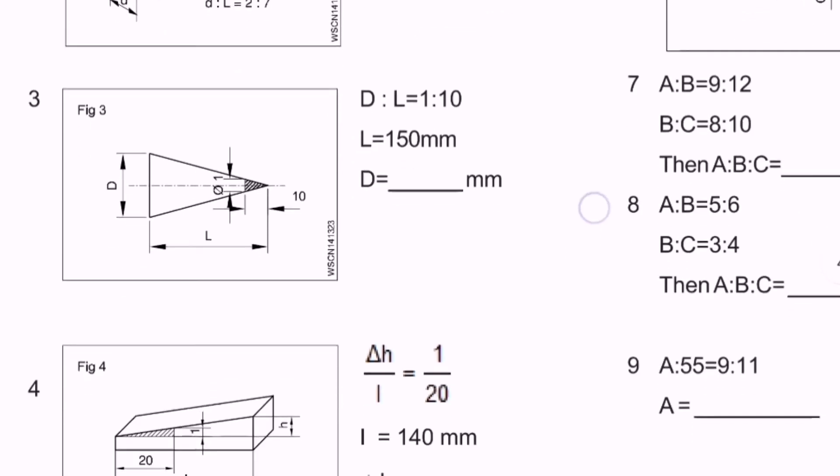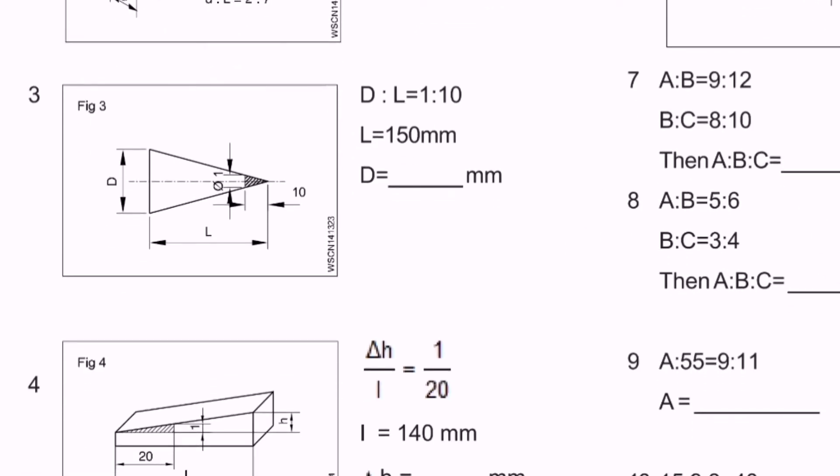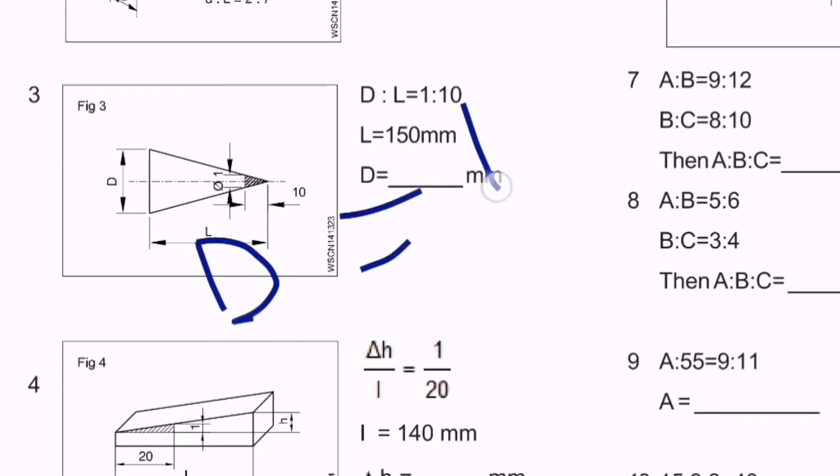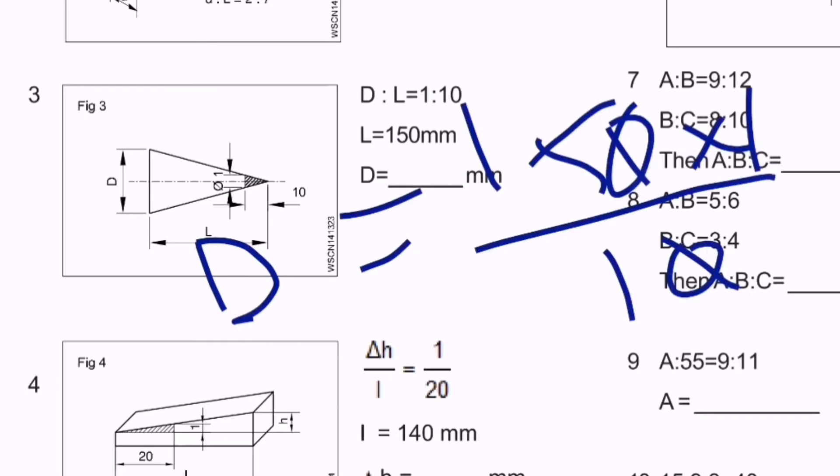Question three: there is a triangle where diameter to length ratio D/L equals 1/10. Length is 150, so we need to find diameter. Cross multiplication: 150 divided by 10 equals 15. D equals 15mm.